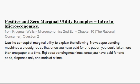The question asks: use the concept of marginal utility to explain the following. Newspaper vending machines are designed so that once you have paid for one paper, you could take more than one paper at a time. But soda vending machines are designed such that once you've paid for one soda, the dispenser only gives one soda at a time.